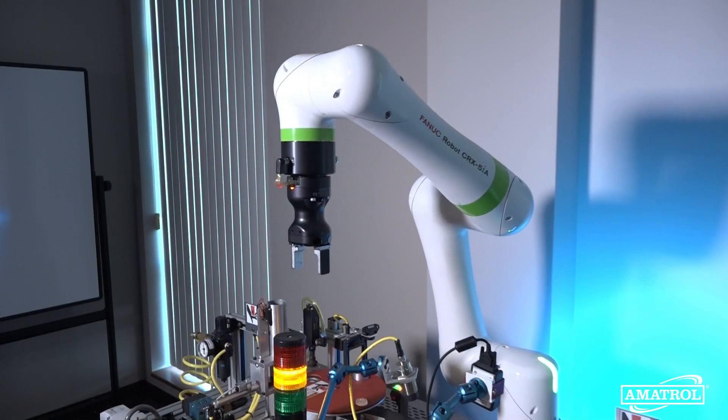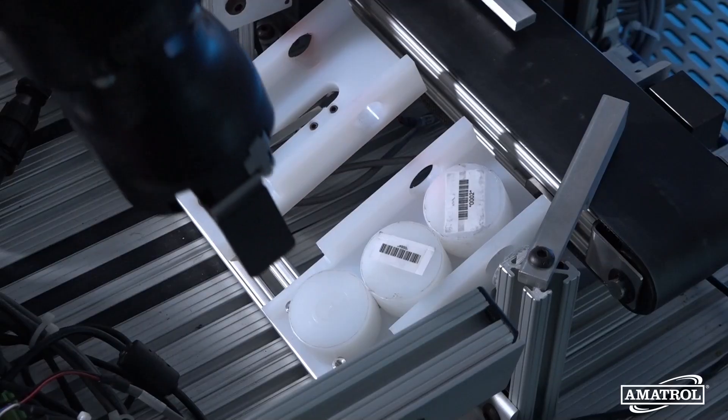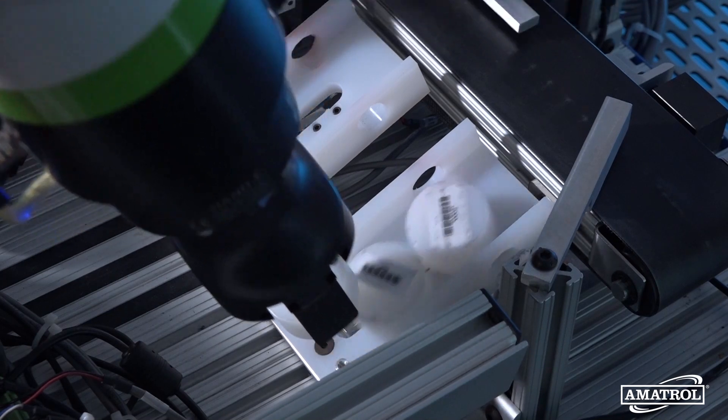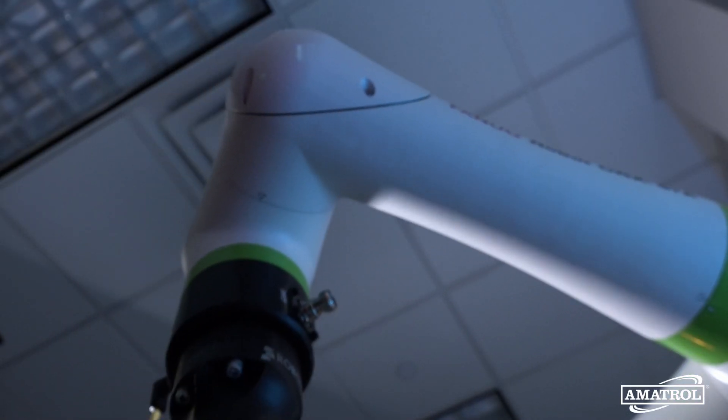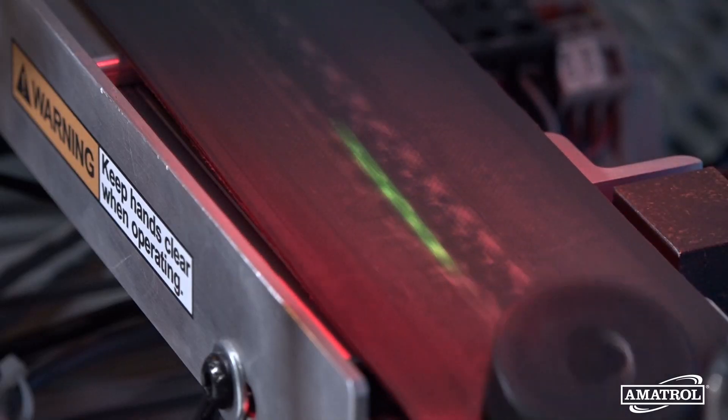The FANUC COBOT features current feedback on all motors, so it senses when it contacts an object or a person and automatically stops. Therefore, it doesn't need additional safety precautions like laser scanners necessary with larger robots.